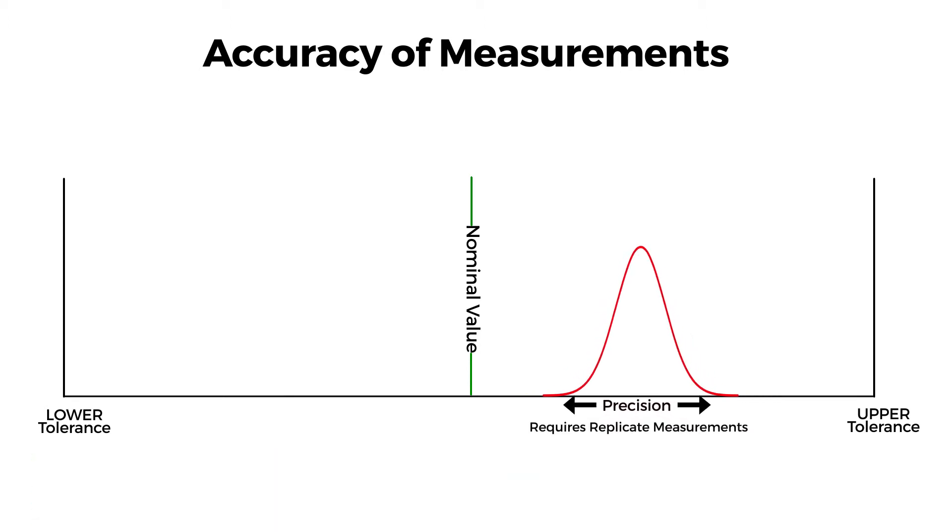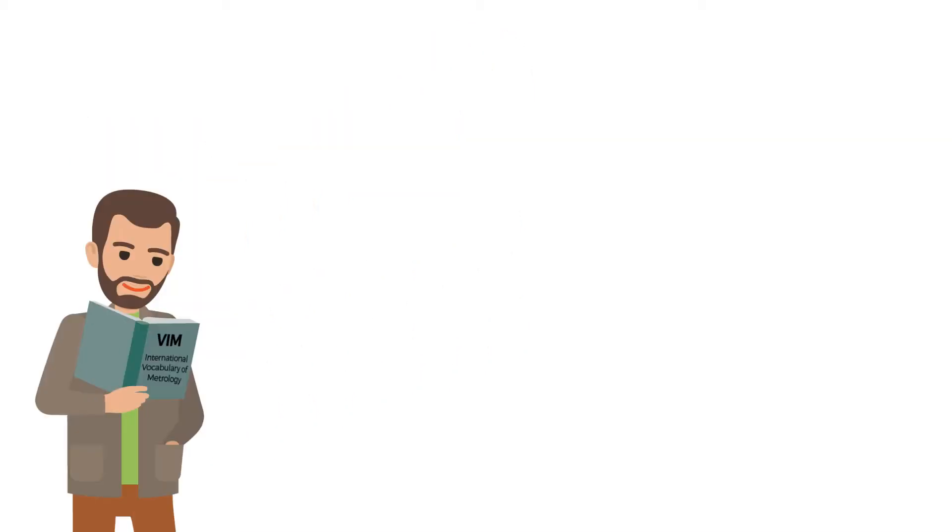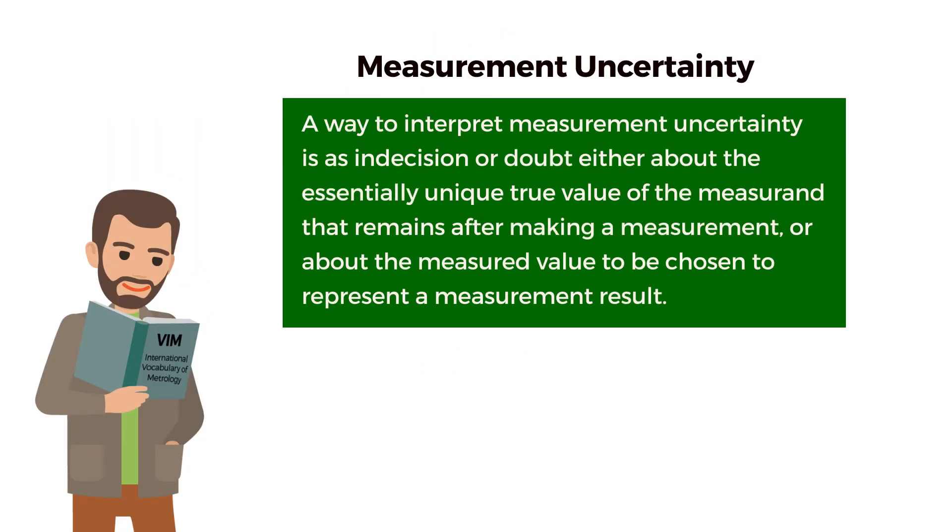The more precise the measurements, the narrower the curve, and the less precise the measurements, the wider the curve. Measurement uncertainty, which includes precision, is explained in the international vocabulary of metrology. A way to interpret measurement uncertainty is a doubt about the measurement result.